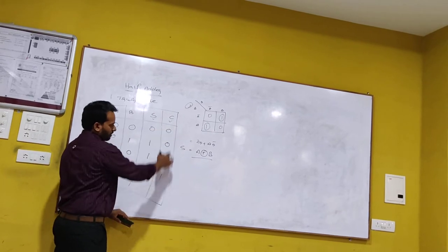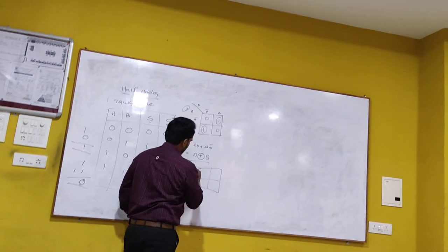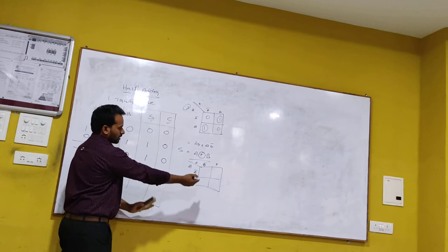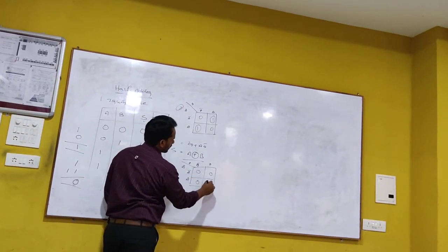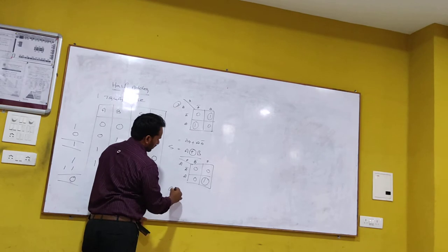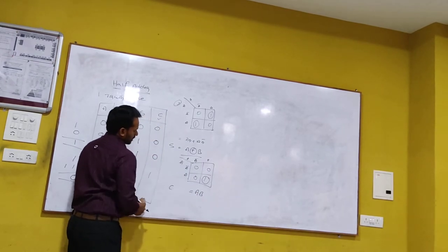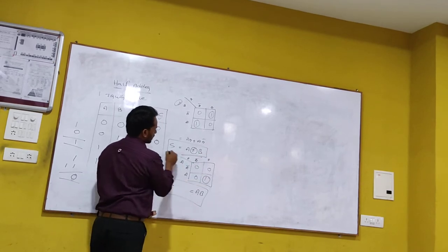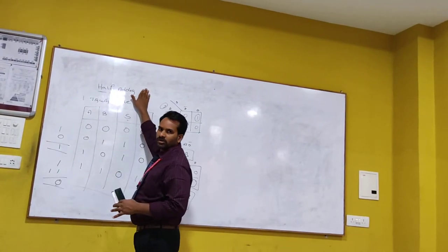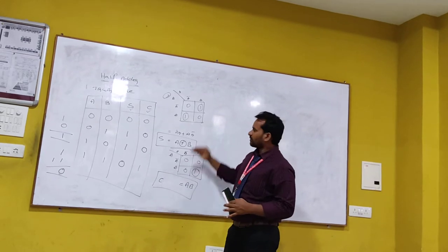In the same way we obtain the equation for carry. Writing the K-map for carry and placing the carry values — 0,0,0,1 — the only possibility is the single group, giving carry = AB. So these are the two equations: sum = A XOR B, and carry = AB.